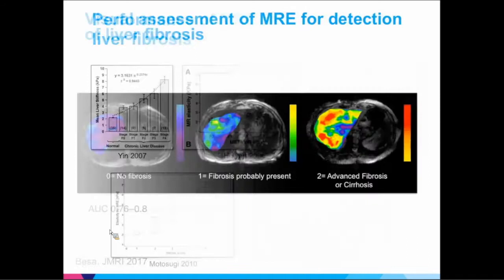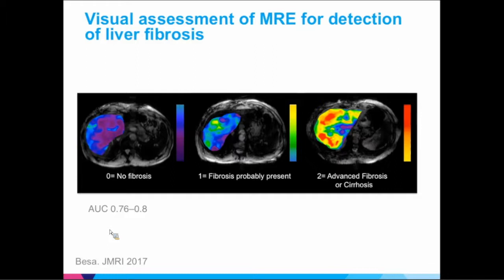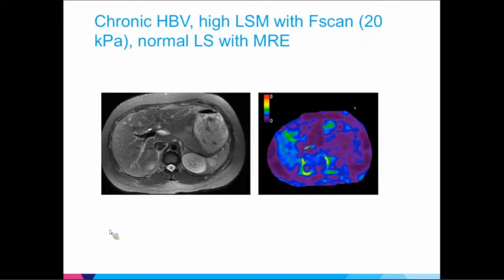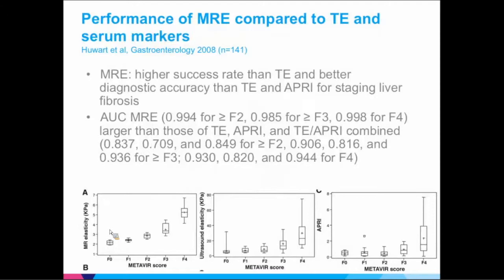We also looked at visual assessment of the color elastogram images. We came up with a visual classification that takes 30 seconds: 0 for no fibrosis, 1 for some degree of fibrosis, 2 for advanced fibrosis or cirrhosis. The AUC was almost 0.8 just looking at images without measuring anything, and this was all biopsy-proven. We also showed a case where FibroScan had 20 kilopascals — very high, suggesting cirrhosis — while MRI showed normal liver stiffness, illustrating the discordance between methods.